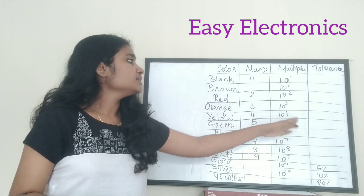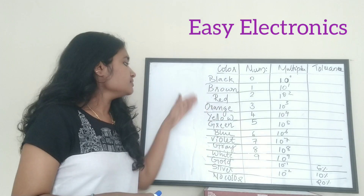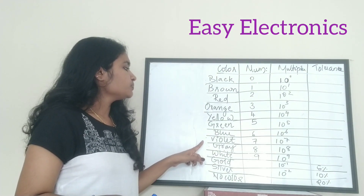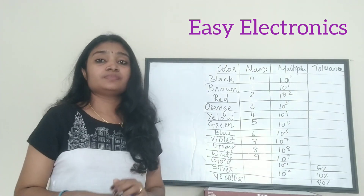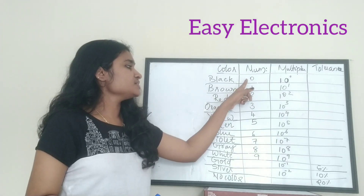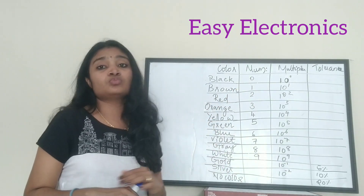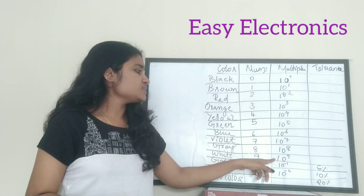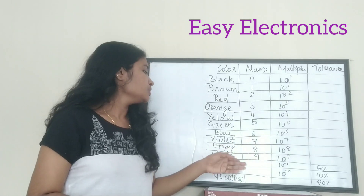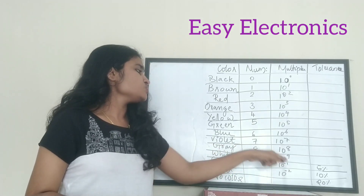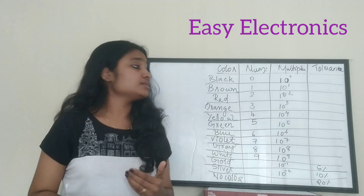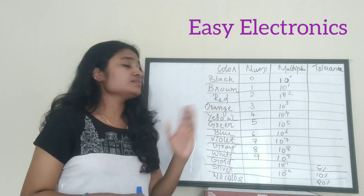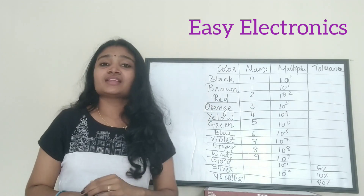The resistor color coding chart has four columns: first is the color, second is the number, third is the multiplier, and last is the tolerance value. The colors present in the chart are black, brown, red, orange, yellow, green, blue, violet, gray, white, gold, silver, and no color. The number values run continuously from 0 up to 9. The multiplier runs from 10 raised to 0 up to 10 raised to 9, and for gold it is 10 raised to minus 1, silver is 10 raised to minus 2. Tolerance values are given for gold (5%), silver (10%), and no color (20%).